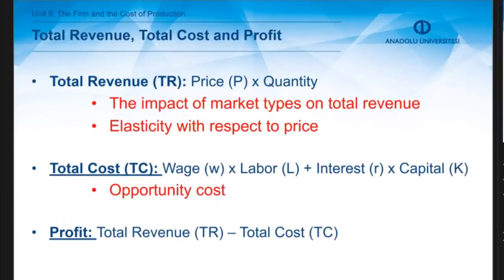Of course, there are some important terms referring to the elements of the production process. The first one is total revenue. We can say that the total revenue of a firm is the price times the quantity sold by the firm, and we can formalize it as shown on the screen.